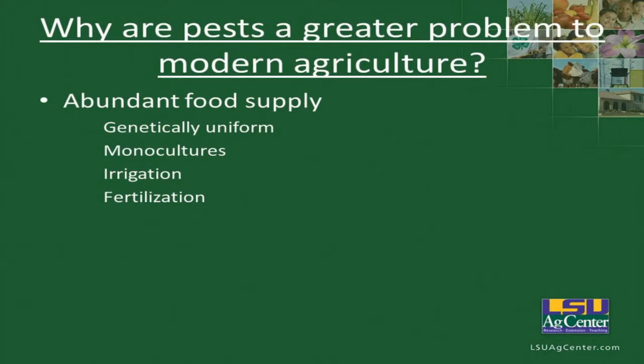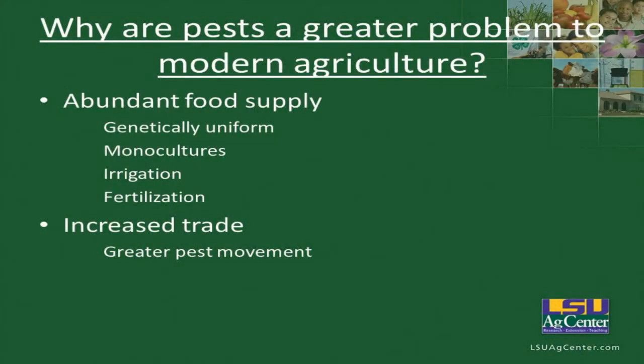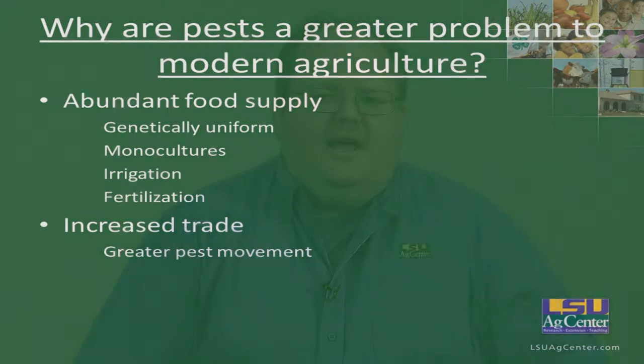We also provide irrigation and fertilization — our crops are very healthy and producing high yields, but this also provides high pest populations. We've increased our trade, and with greater trade comes greater pest movement. Insects can move through packaging materials and soil, and several of our insects are invasives. In fact, most pest species in the United States are due to invasive pests that have been moved in.